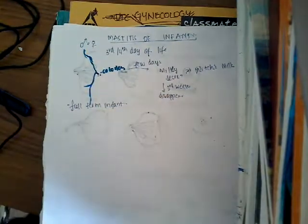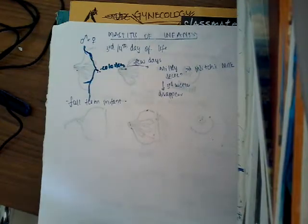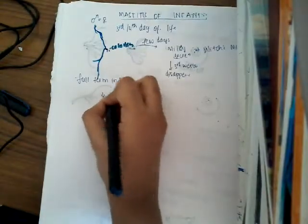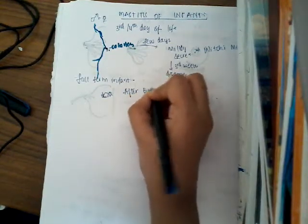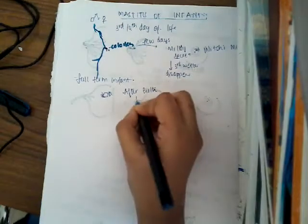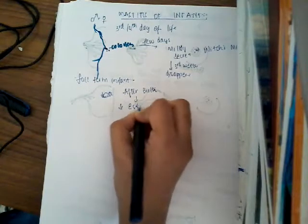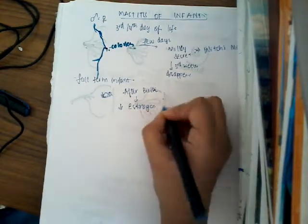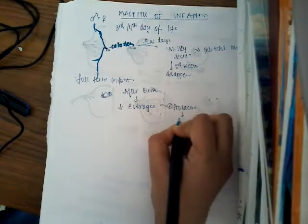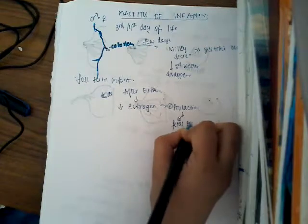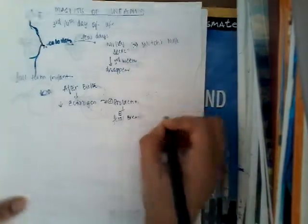Why is there this witch's milk or mastitis of infants? Normally, before birth, there is maternal estrogen entering into the infant. But after birth, there is decreased maternal estrogen. Because of decreased maternal estrogen, this will activate prolactin. This prolactin will activate the fetal breast, and the fetal breast produces milk. So this is the reason for mastitis of infants.